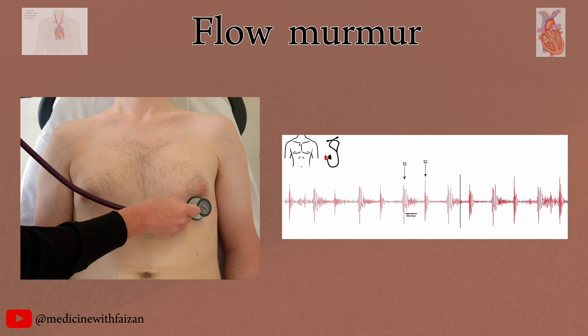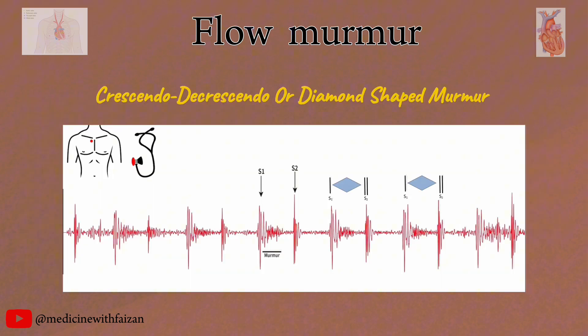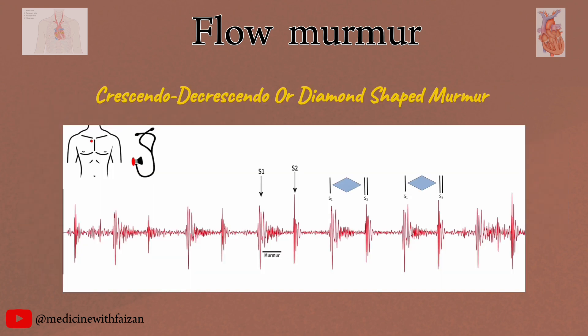Flow murmurs are also referred to as innocent, physiologic, and benign murmurs. They are the most common form of systolic murmurs. They are typically systolic, short, soft, crescendo-decrescendo, or diamond-shaped, or early-peaking murmurs. The intensity of the murmur increases during acceleration of blood flow early in systole — the crescendo part — then decreases with the later deceleration of flow — the decrescendo part — giving a crescendo-decrescendo configuration as can be seen in the phonocardiogram.